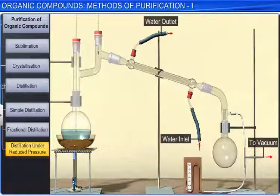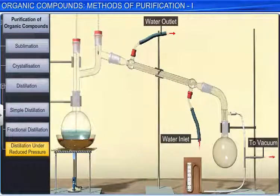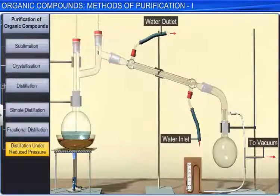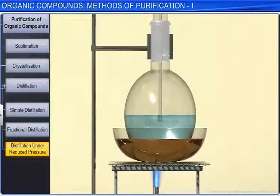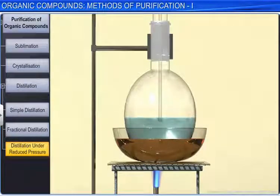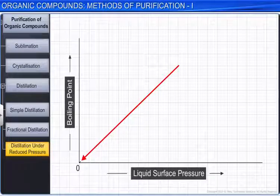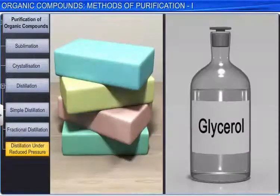In the case of liquids with very high boiling points and liquids that decompose below or at their boiling points, another method called distillation under reduced pressure is used for purification. In this method, the pressure on the liquids is reduced with the help of a water pump or a vacuum pump. A liquid starts to boil when its vapor pressure becomes equal to the external pressure. Thus, reducing the pressure on the liquid surface reduces the boiling point of the liquid. In soap industries, glycerol is separated from spent lime using this method.